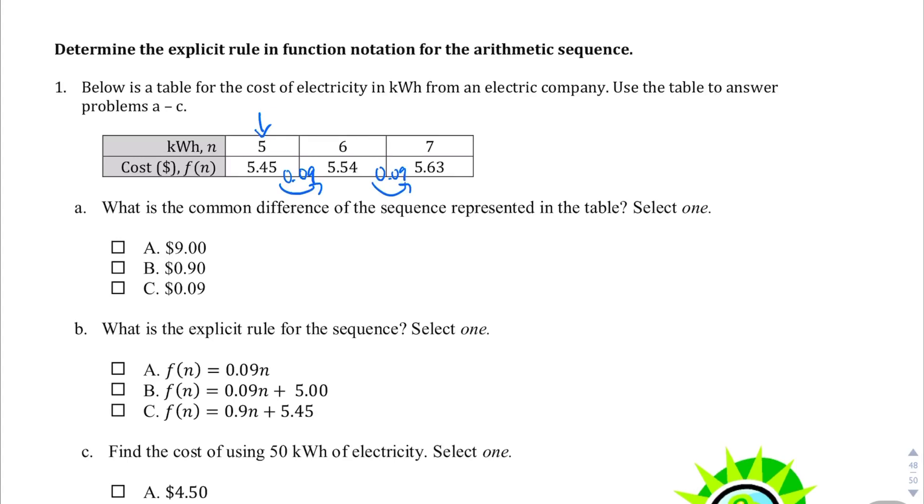So what's the common difference? That's question A. Well, it's 9 cents, not $9, not 90 cents. We want 9 cents. So the correct answer there is C.